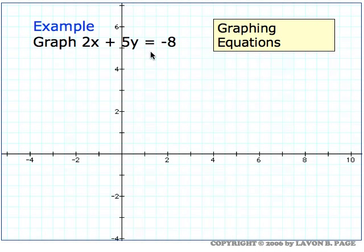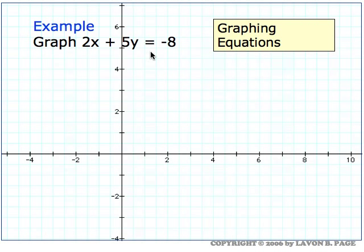When we're graphing equations, we start out by plotting points. If we're graphing a straight line, we typically start by finding the points where it crosses the x and y-axis.